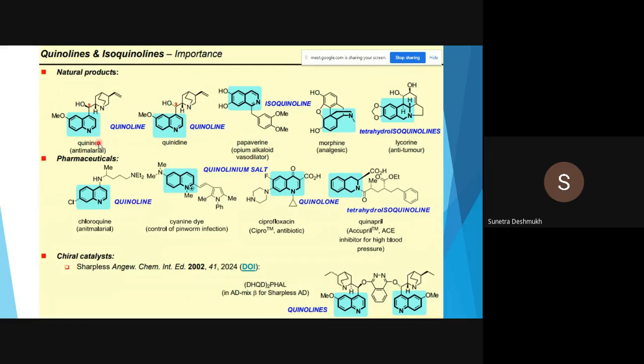In natural products, we have quinine, an antimalarial drug, and quinidine. Then we have isoquinoline-containing compounds.